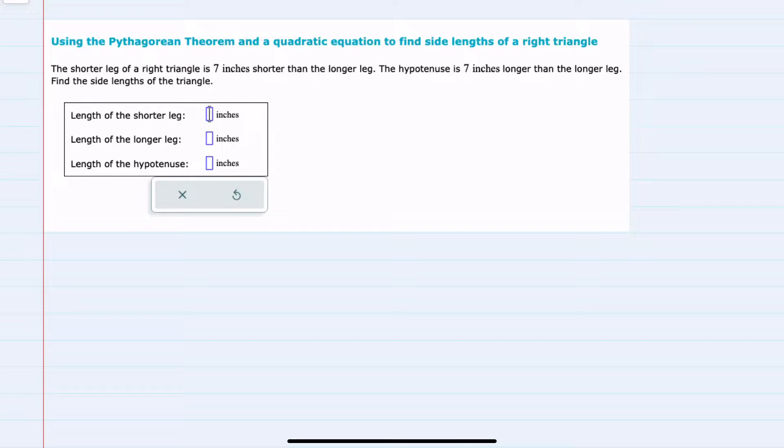In this video I'll be helping you with the Alex problem type called using the Pythagorean Theorem and a quadratic equation to find side lengths of a right triangle.